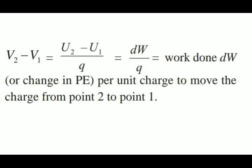So we are having two points, point number one and point number two. A charge moves from point one to point two, so the energy changes. At point one the energy of the charge is U1, and at point two it is U2. Similarly, the potential at point one is V1 and at point two is V2. All of this equals dW upon q — the work done per unit charge to move the charge from point two to point one. This is the electric potential difference between two point charges in an electric field.